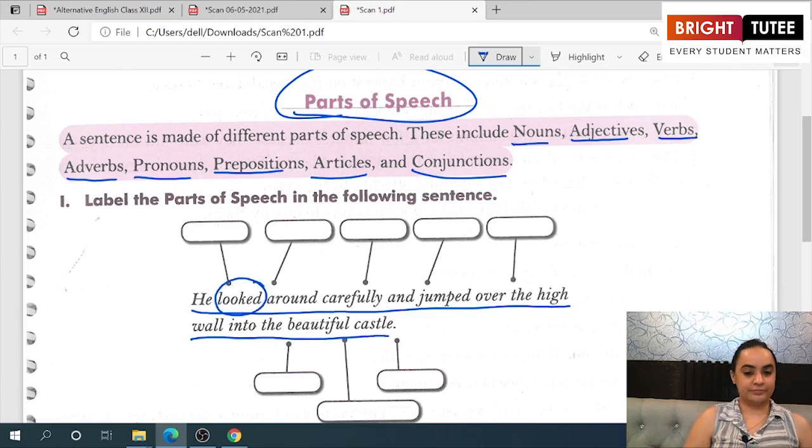'Looked' is an action word. When you look at somebody or look over somebody, that is an action word that represents what action is taking place. So an action word is known as a verb.